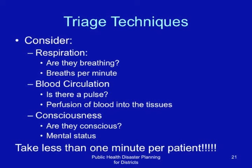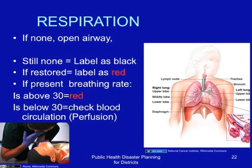Checking for respiration: if there is no respiration, open and clear the airway by extending the neck and clearing anything in the mouth. If there is still no breathing, label as black. If respiration is restored, label as red. If respiration was initially present and their breathing rate is above 30 breaths per minute, or visibly fast breathing, label as red. However, if the breathing rate is below 30, proceed to the next stage: saturation or perfusion.